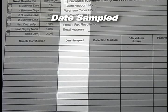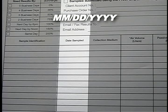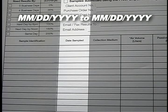Date Sampled: Provide the date the sample was collected in the following format: Month, Day, Year. If the sample was collected over a range of days, provide the dates as Month, Day, Year to Month, Day, Year.